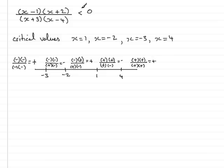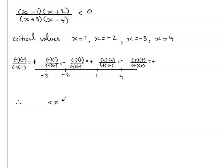We're looking for values of x that make this expression negative — less than zero. Looking at the number line, any number between minus 3 and minus 2 gives a negative answer, and any value of x between 1 and 4 also gives a negative answer. Therefore, the solution is: x is any number between minus 3 and minus 2, or x is any number between 1 and 4.